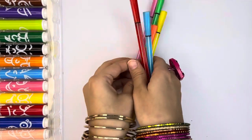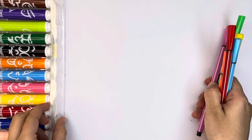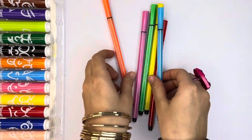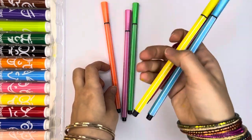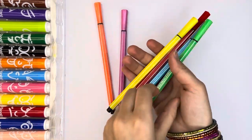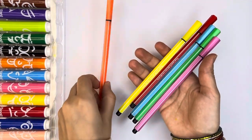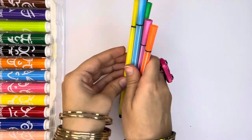Okay guys, now let's count. Let's count these markers. One marker, two markers, three markers, four markers, five markers, six markers. We have six markers.